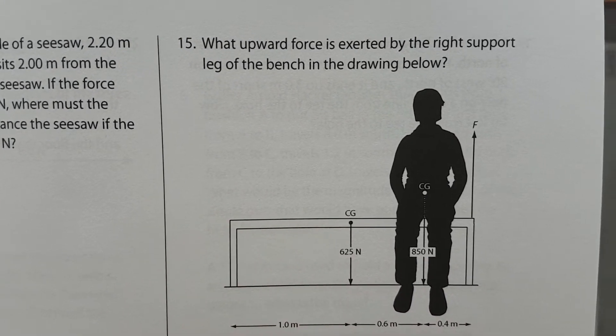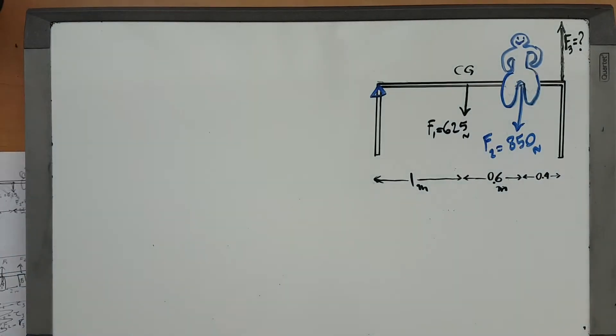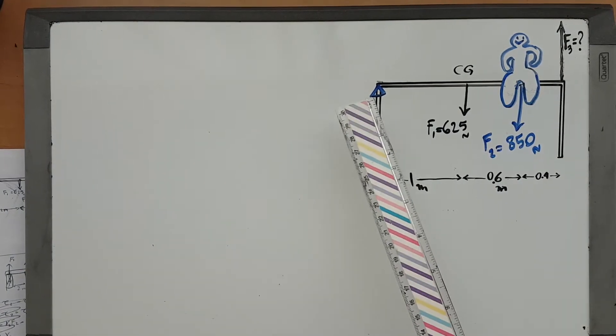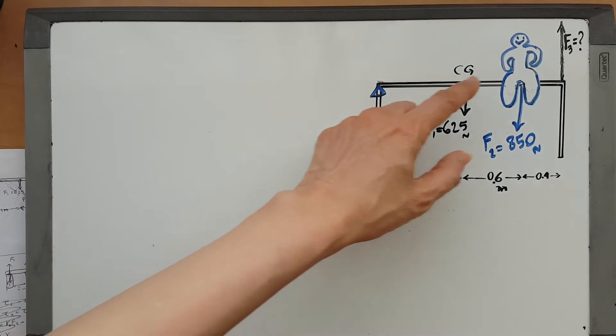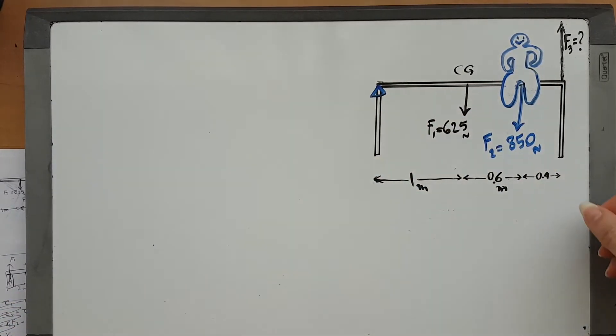This is going to be considered the pivot point. We imagine this supporting leg was attached to the bench and this one was attached later.